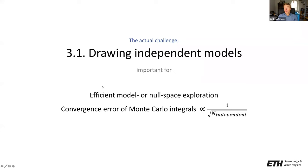Why is it important to draw models or samples that are independent? First of all, it is important for efficient model or null space exploration, because independence means that you're drawing models that are actually different from each other. If you have a Monte Carlo algorithm that draws dependent models, the models you draw successively more or less always look the same — and that, of course, is not what you want.